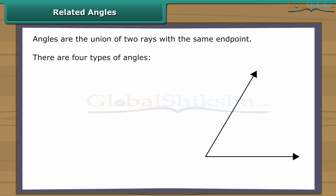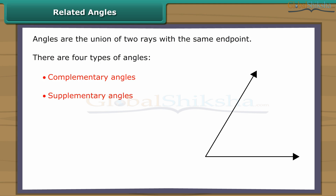There are four types of angles. They are complementary angles, supplementary angles, adjacent angles and vertical angles. Now take a brief look at all the angles.